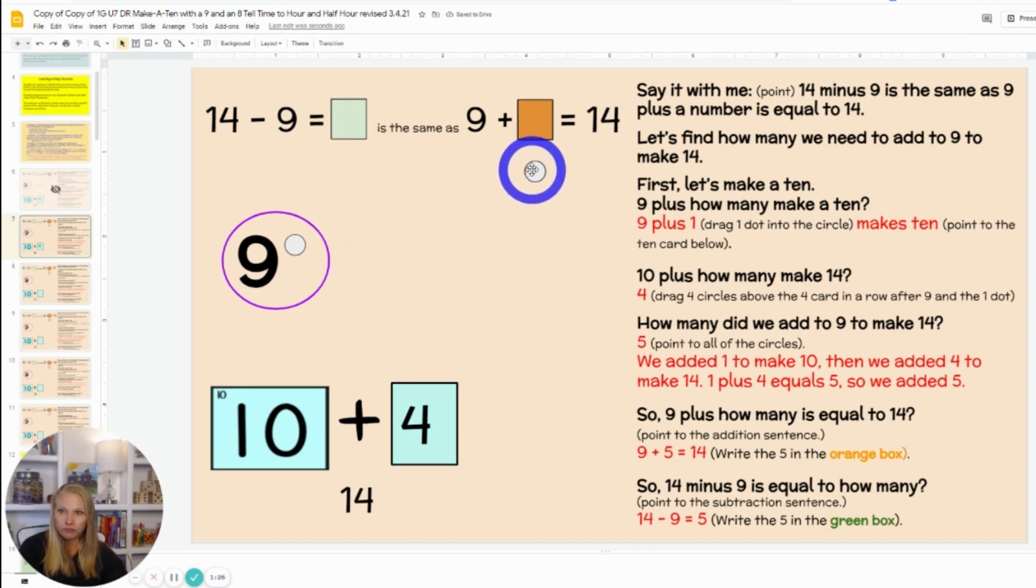We're going to add on 4 more. How many did we add up all together? We have 4 and 1, which means all together we added class 5. 9 plus 5 equals 14. 14 minus 9 equals 5.